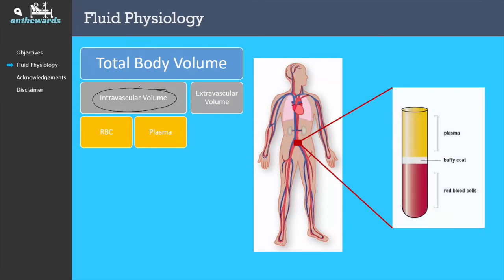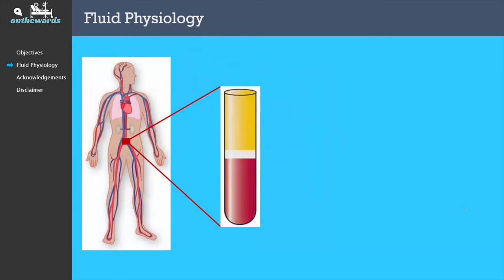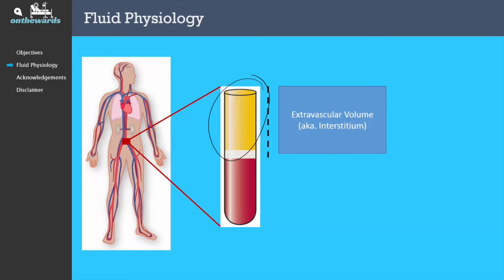If we were to take a blood sample from a vein and run it through a centrifuge, we'd find that approximately 55% will be plasma and 45% will be red blood cells. The intravascular volume is separated from the extravascular volume by a semipermeable membrane. This membrane is permeable to fluid and electrolytes but is not permeable to large molecules such as proteins. It is the plasma component of whole blood that is most active in fluid exchange with the extravascular space, as it contains important electrolytes such as sodium and also contains proteins such as albumin. The red blood cell component does not play a significant role in fluid exchange.